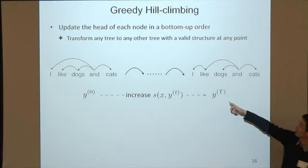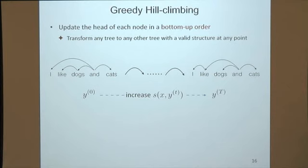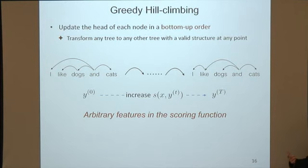We keep updating the head of each node in the sentence in a bottom-up order — first the leaf nodes, then their parents, and finally the root — and keep increasing the tree score until we reach a local optimum. The main reason for this bottom-up order is that we can transform from any tree to any other tree while maintaining a valid tree structure at any point. We always operate on a valid tree structure during the update, so we can incorporate arbitrary global features in the scoring function.